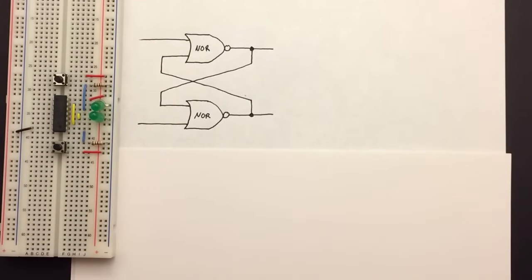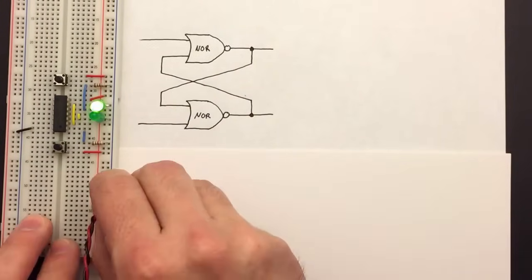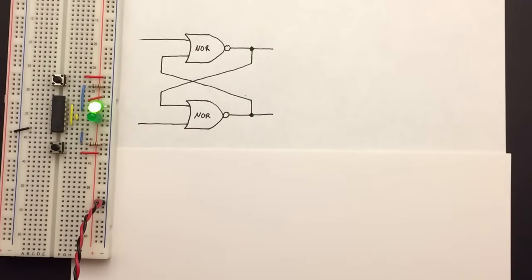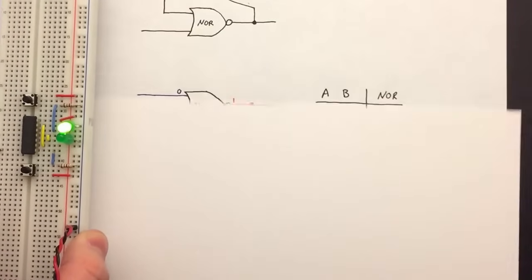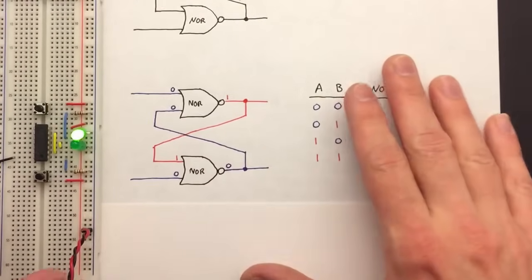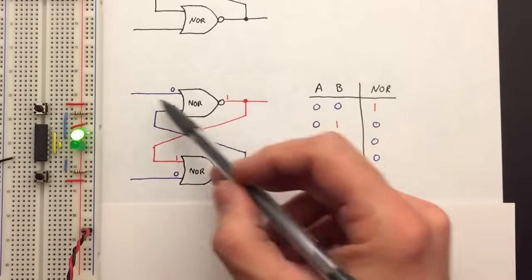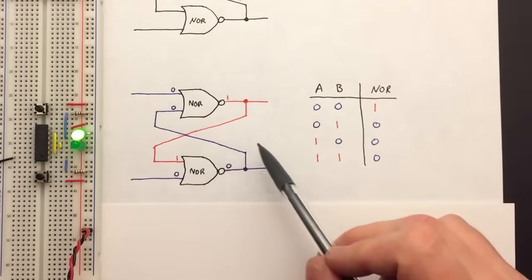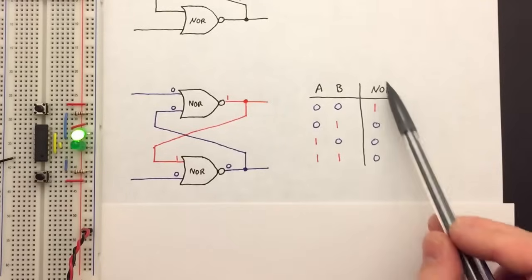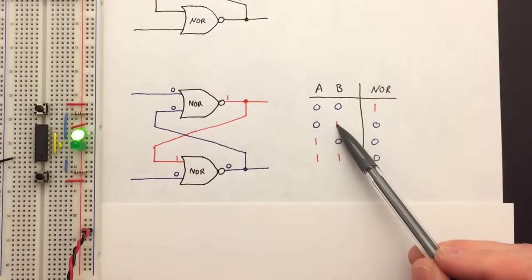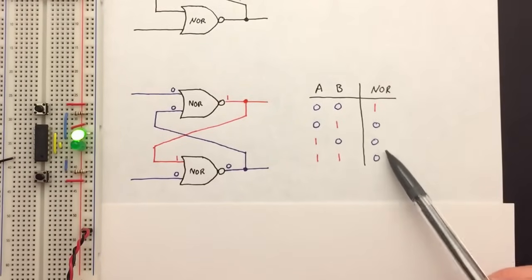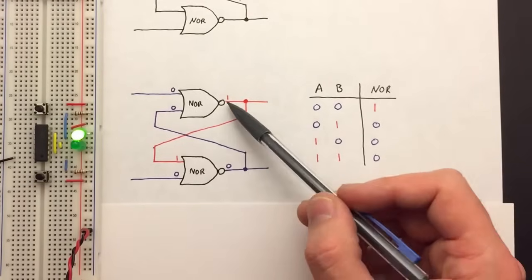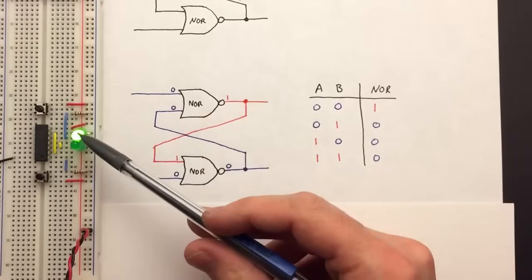Before we think too much about this, let's power this up and see what happens. We plug it in and the top LED comes on — so the NOR gate on top is switched on. I've drawn the states to make this easier to understand. As a reminder, here's the truth table for a NOR gate: if either input or both are on, the output is off; otherwise it's on. So it's the opposite output of an OR gate. In this case the top NOR gate is on, and we see the LED there.